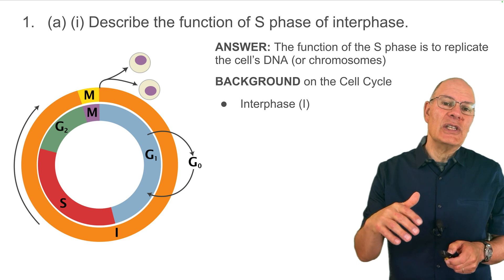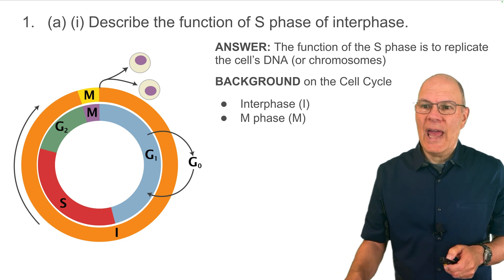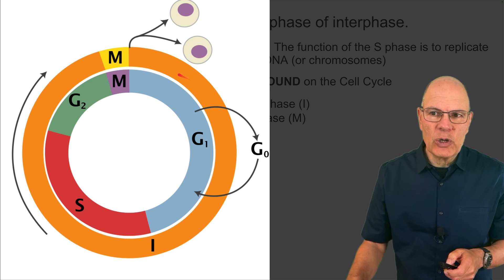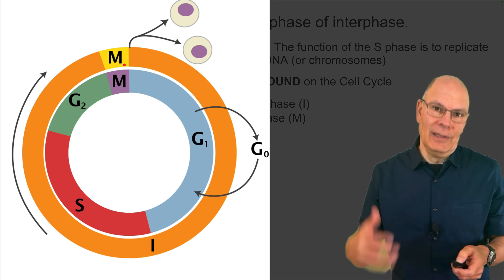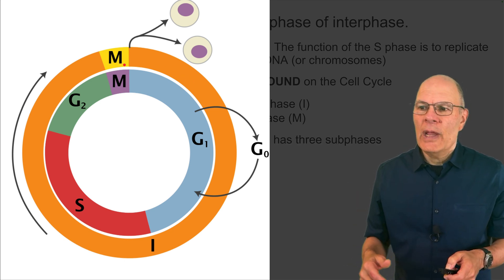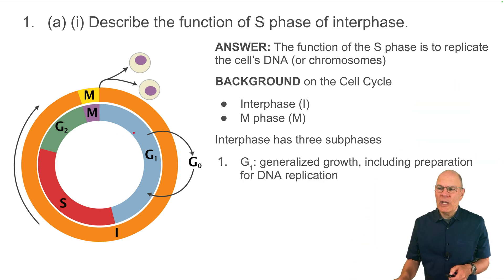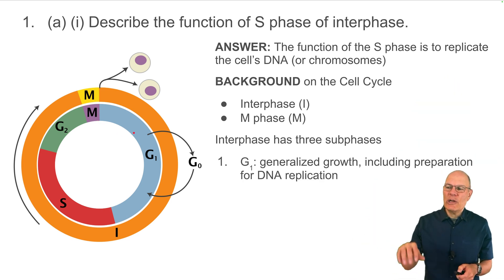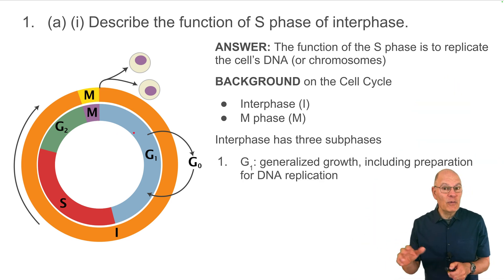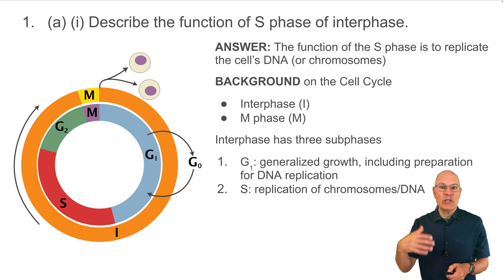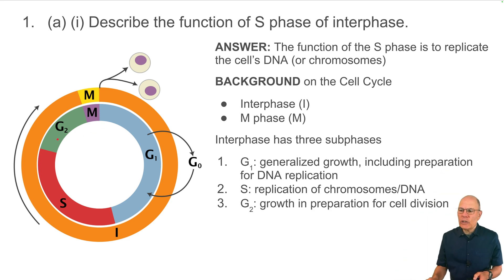The cell cycle consists of interphase and M phase. Interphase is everything shown in orange around the entire circle. M phase is the area labeled M in yellow. Interphase itself has three sub-phases: G1, which is generalized growth including preparation for DNA replication; S phase, which is replication of the chromosomes and DNA; and G2, which is growth in preparation for cell division.